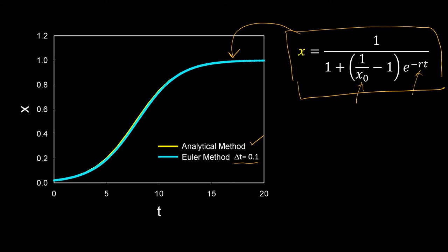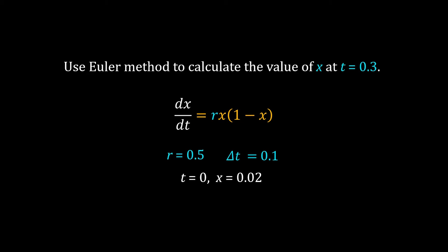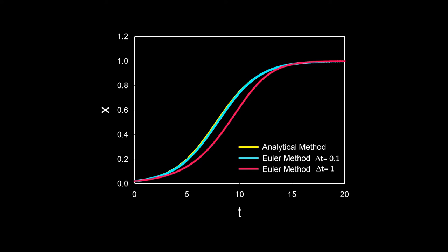Before moving on, why don't you try Euler's method yourself? I have written down the ODE and given you the numerical values of the initial condition, parameter, and delta_t. Use Euler's method to calculate the value of x at t = 0.3. I have repeated my calculation for the given ODE using Euler's method but now with a bigger delta_t equal to 1. The data is shown in the red line. You can see the Euler's method result has deviated quite a bit from the exact analytical result.